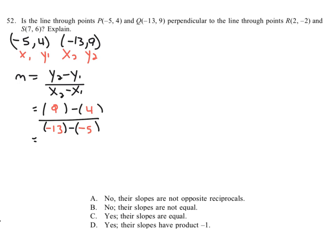And if we calculate that out, 9 minus 4 is 5, over negative 13 minus negative 5 is the same as negative 13 plus 5. And so that's negative 8. So this line has a slope of negative 5 over 8.